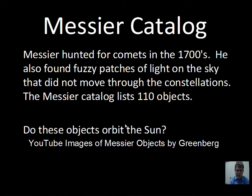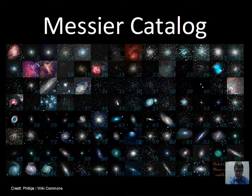Messier did not see these objects move through the stars or constellations. Do they orbit the Sun? No, they do not. The planets and the Moon move through the constellations because of their close proximity to us. The objects in Messier's catalog are at great distances from us — they do not orbit the Sun and consequently have a more fixed position among the stars.